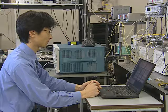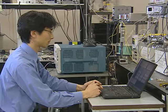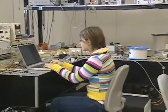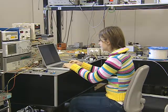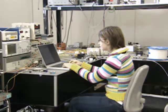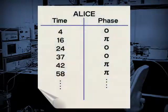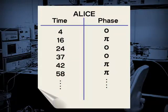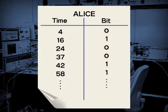Then, he informs Alice of the receiving time only via the internet. Alice extracts the information on the phase difference for that time. She identifies a phase difference of zero as zero and a phase difference of pi as one.